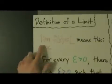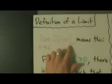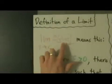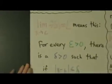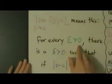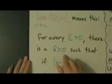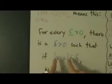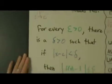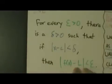So the limit as x approaches c of f of x equals L — when we say that, what we really mean is this: for every epsilon greater than 0 there is a delta greater than 0 such that if the absolute value of x minus c is less than delta, then the absolute value of f of x minus L is less than epsilon.